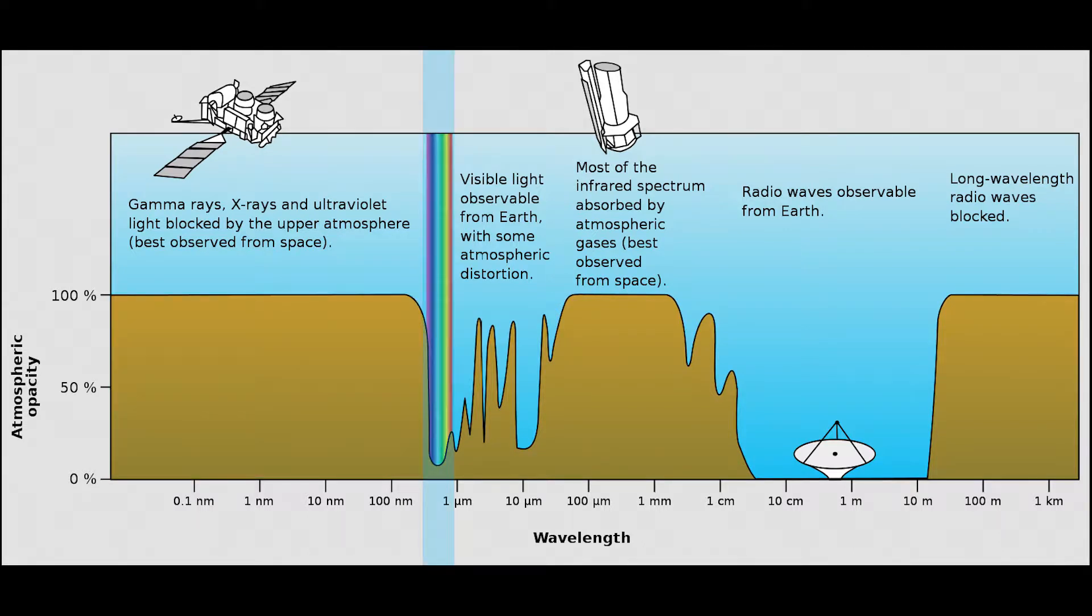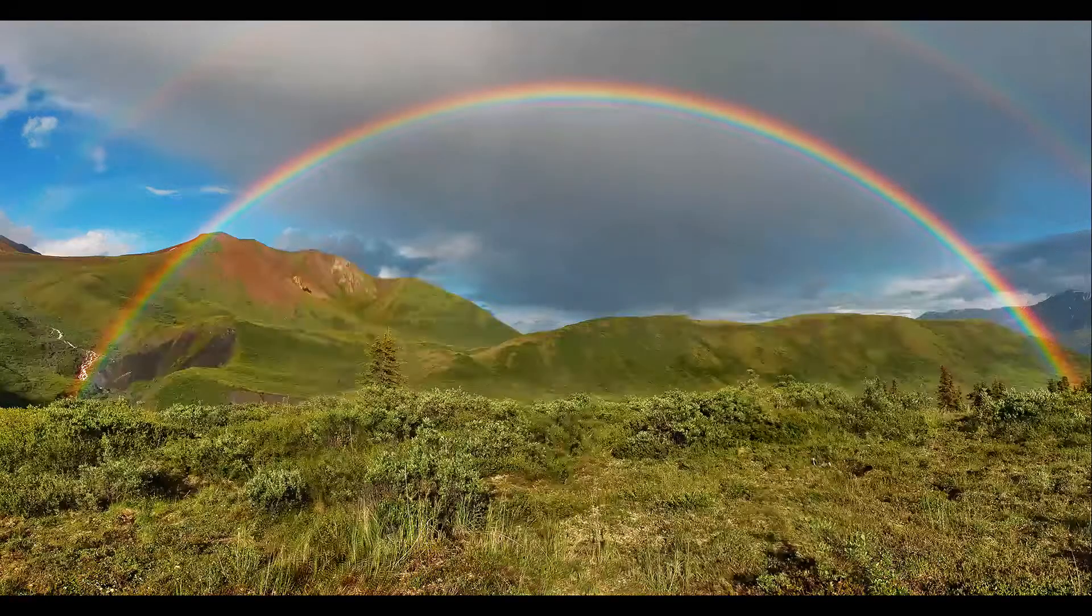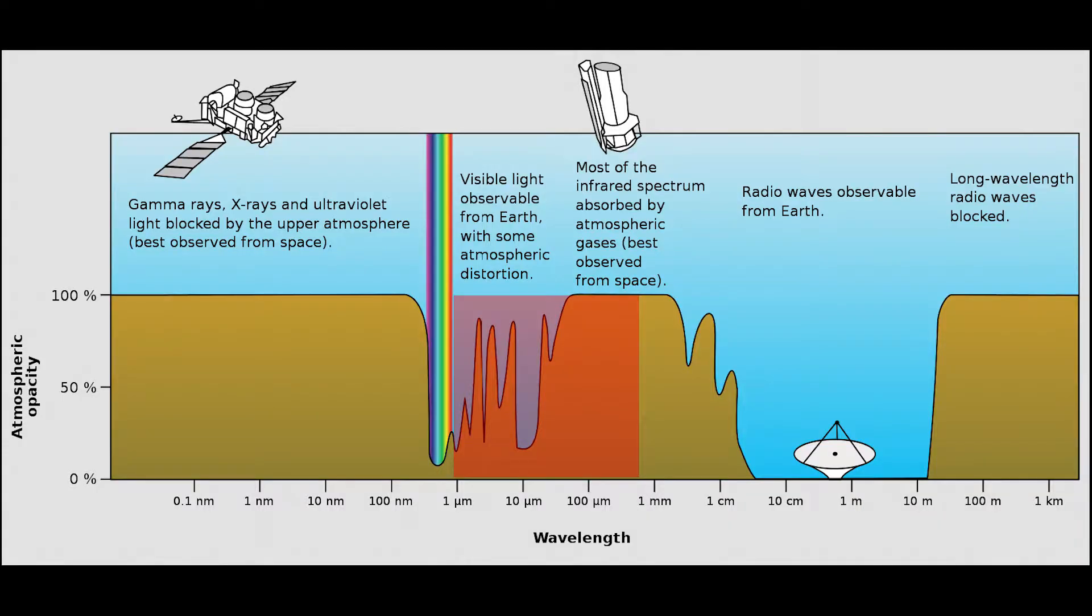Air then becomes transparent in the ultraviolet and we have visible light with every color that we can see. After red, beyond what is visible to us, is infrared, the topic of today's video.